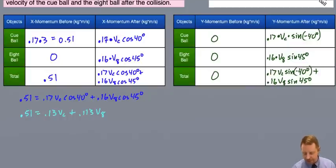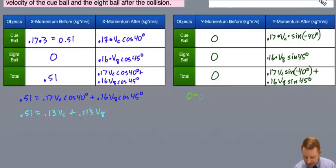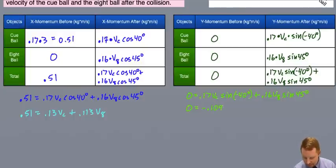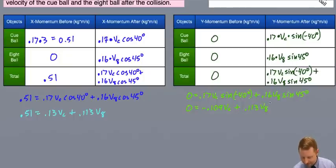Now for y-momentum: by conservation of momentum, the total momentum before equals the total after, so 0 equals 0.17 vc sin negative 40 degrees plus 0.16 v8 sin 45 degrees. Simplifying, 0 equals negative 0.109 vc plus 0.113 v8. I now have two equations and two unknowns, so I can solve this system of equations.